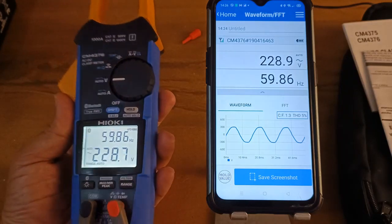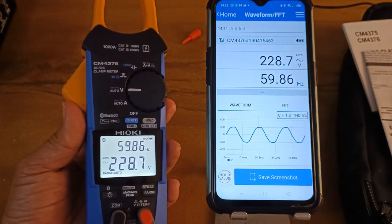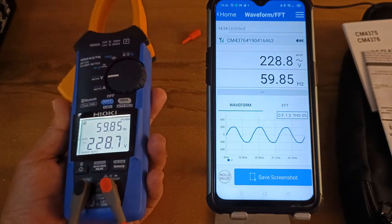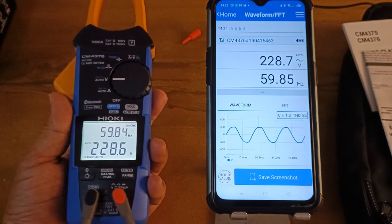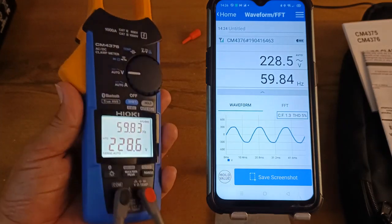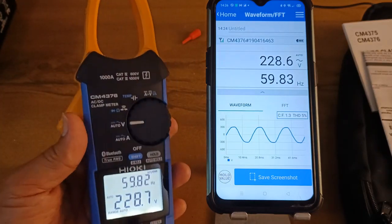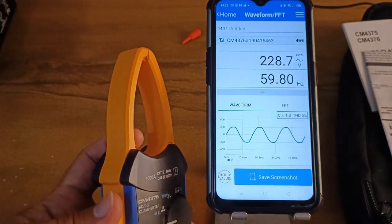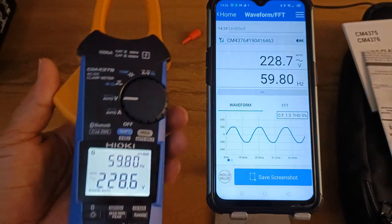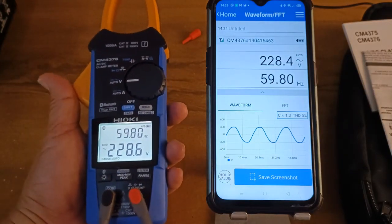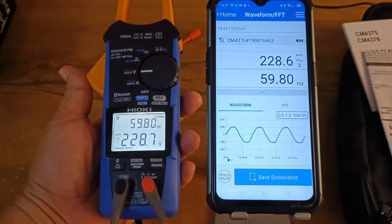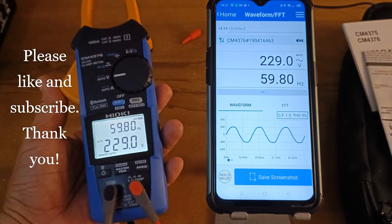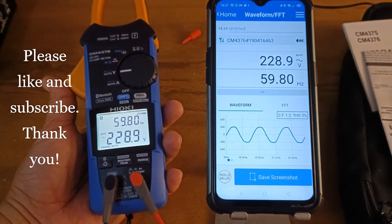So that's it guys. I hope this general overview of the Hioki CM4376 AC-DC current clamp meter has provided you with some general information or overview of the capabilities of this particular Hioki clamp meter with slim or thin jaw design. If you have comments or suggestions please write them down below in the comments section. If you like this I would appreciate your subscription. Thank you for watching and stay safe.